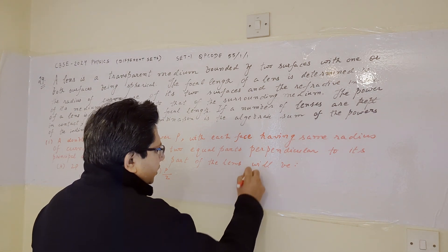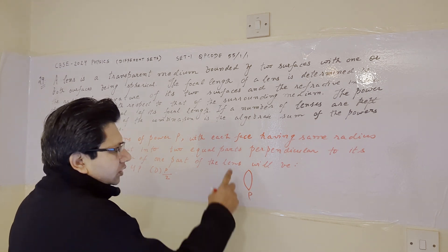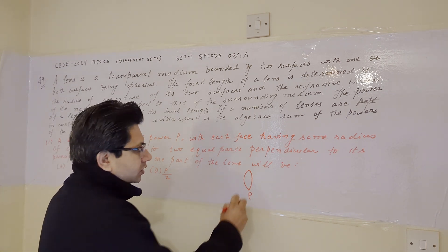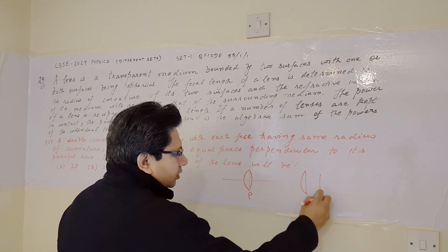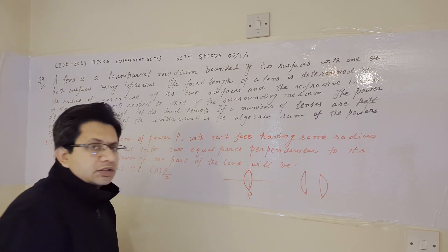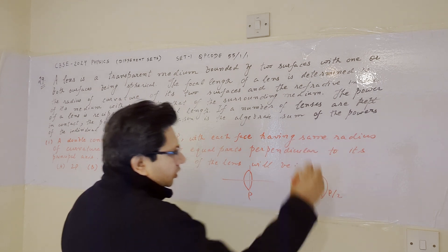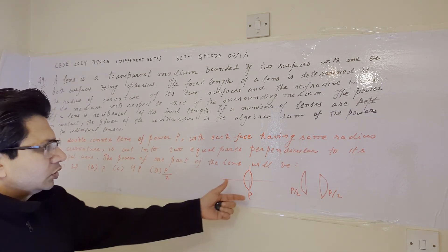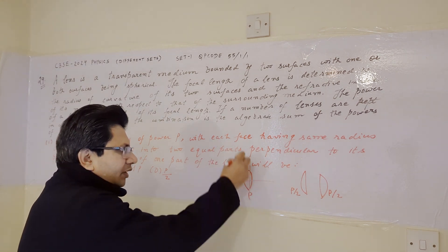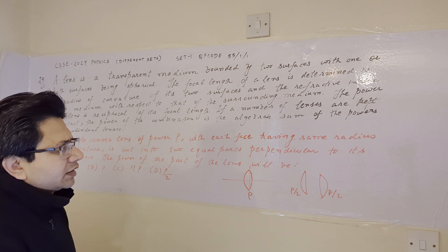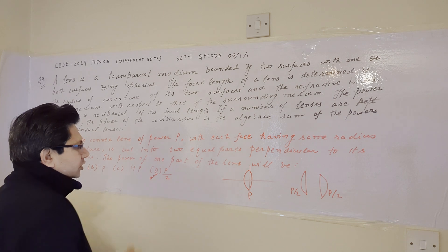In this problem, suppose we have a lens having a power of P, and it is cut into two equal parts perpendicular to the principal axis. This is the principal axis, and we cut in the perpendicular direction. When the lens is symmetrically cut along the perpendicular direction to the principal axis, the power is halved — the power of each part is P/2. So option D is correct, which is P/2.